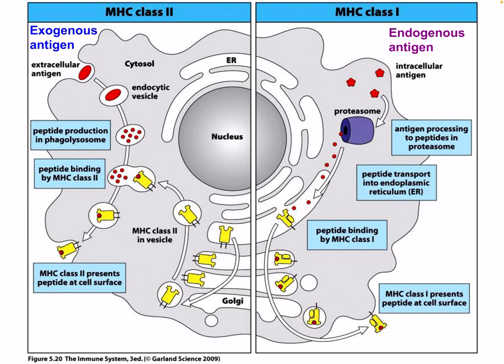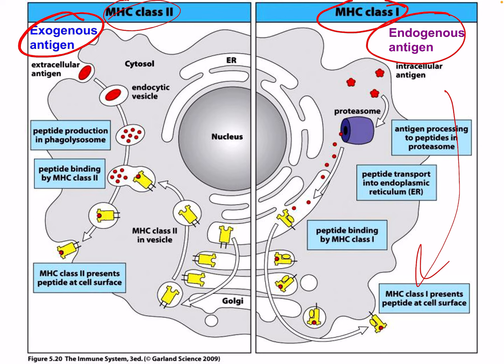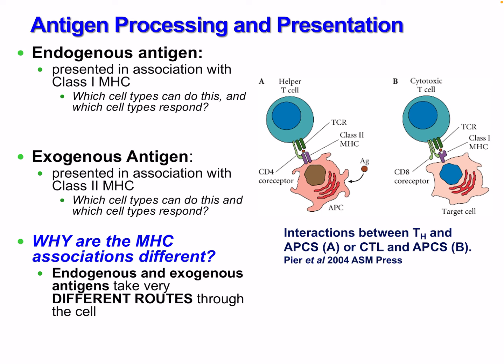Here's the key figure that sums up the entire lecture. We'll look at class 2, then class 1. Class 2 deals with exogenous antigens and class 1 with endogenous antigens. We'll go through these steps in detail — come back to this figure if you want the whole picture at once.